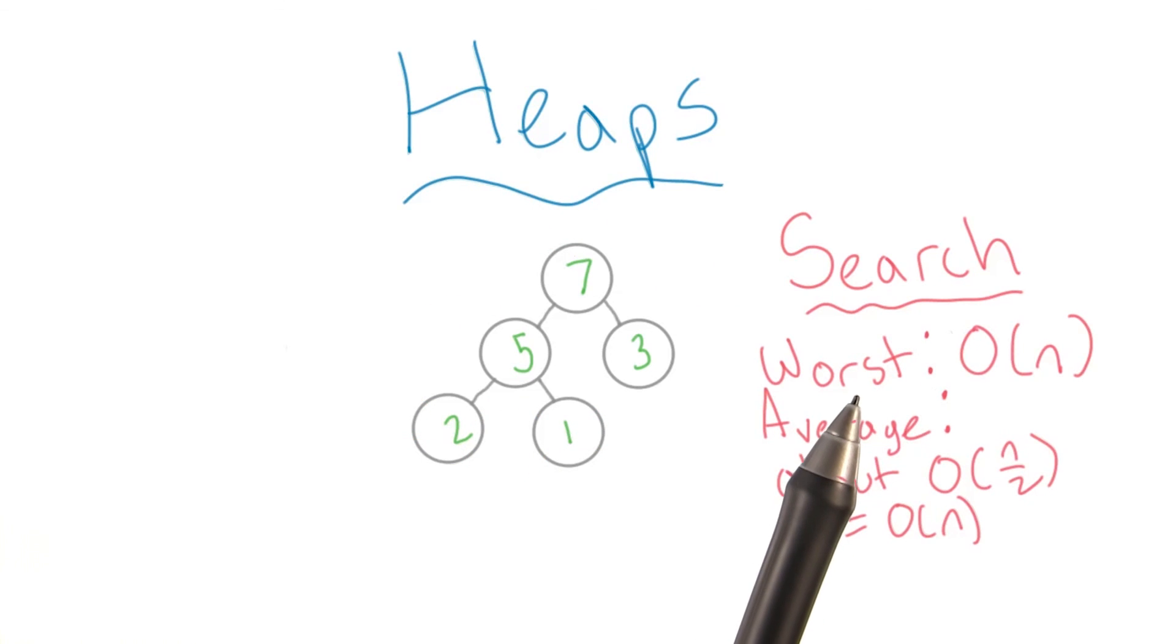The worst case remains, but in the average case we don't actually need to search every element. The average case is closer to n over 2, but that's still approximated to linear time.